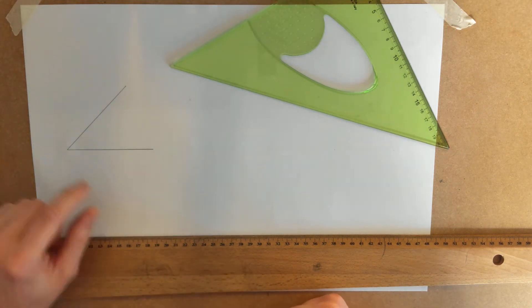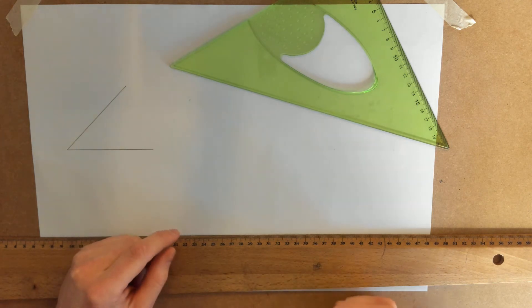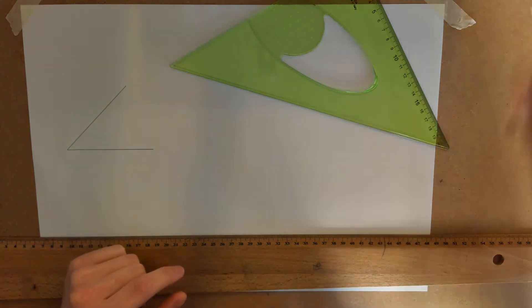In this video we're going to look at how to bisect an angle. We've looked at how to bisect a line and divide a line into a number of equal parts. Now we're going to look at how to bisect an angle.